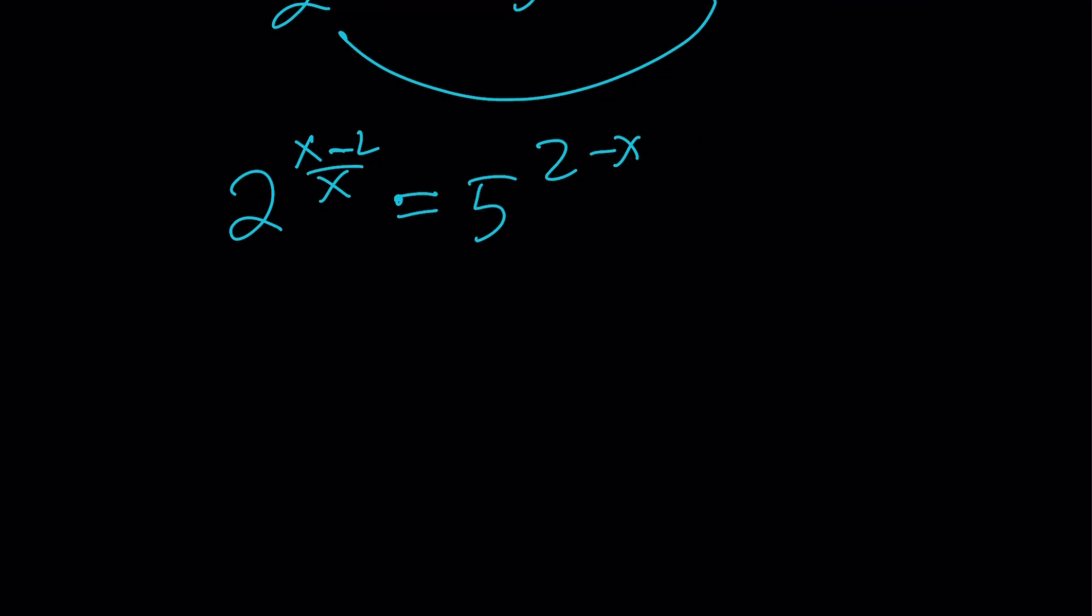Notice that x minus 2 and 2 minus x are opposites. In other words, x equals 2 makes both of them 0. So that's a solution because 2 to the power of 0 equals 5 to the power of 0. That's one of the solutions.